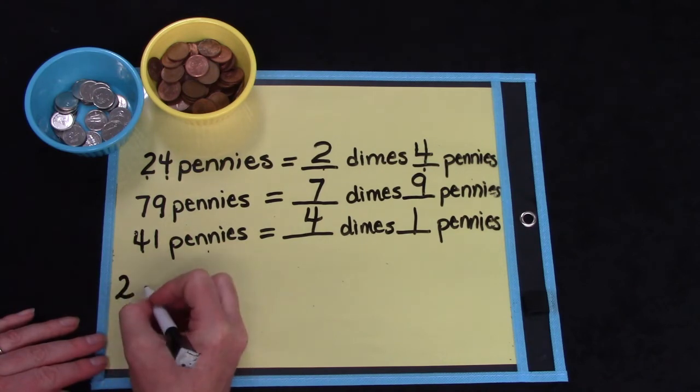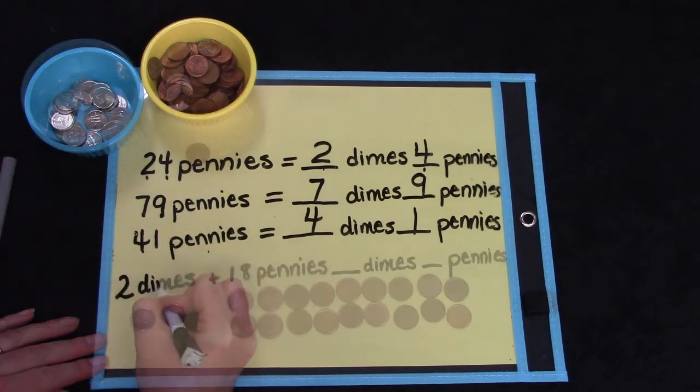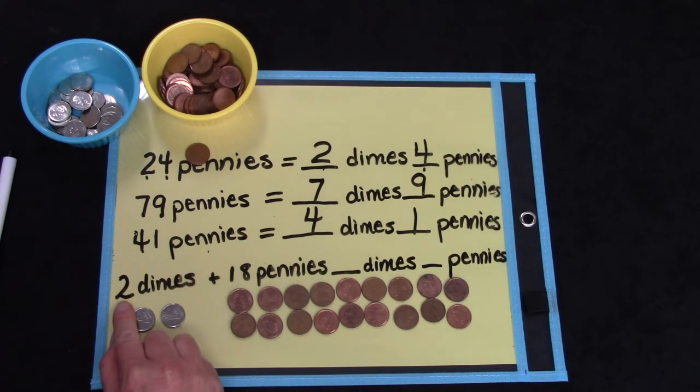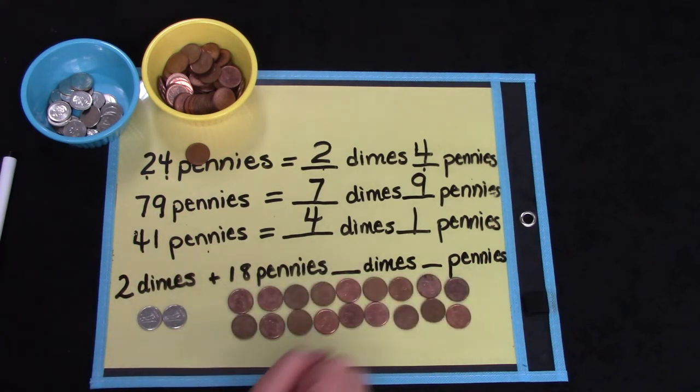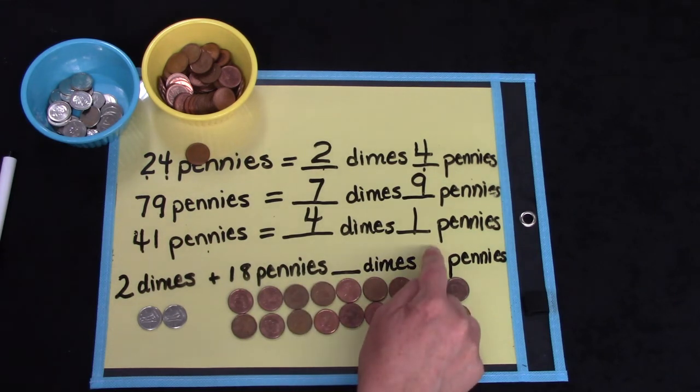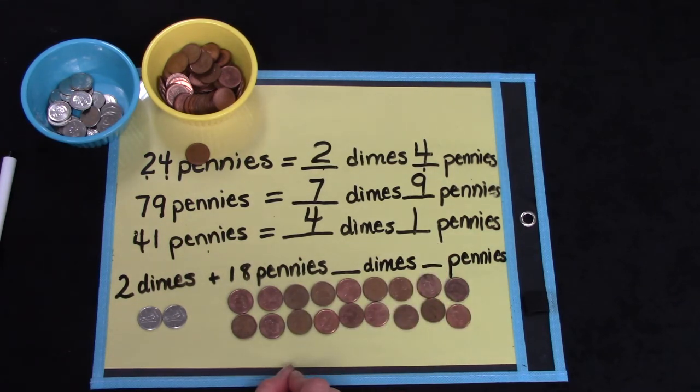Now, I have a tricky question for you. Our tricky question says that we have 2 dimes and 18 pennies. 2, 4, 6, 8, 10, 12, 14, 16, 18. How many dimes is that and how many pennies? Well, it's tricky because we have more than 10 here, don't we?